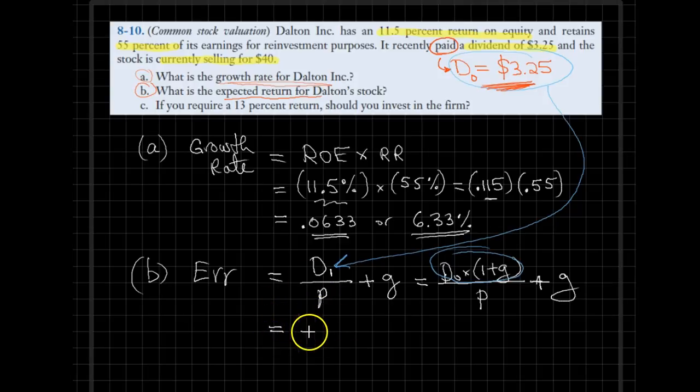So in this case, D0 is $3.25. The growth rate was calculated as 0.0633. The market price is given as $40, and we need to add back the growth rate one more time.